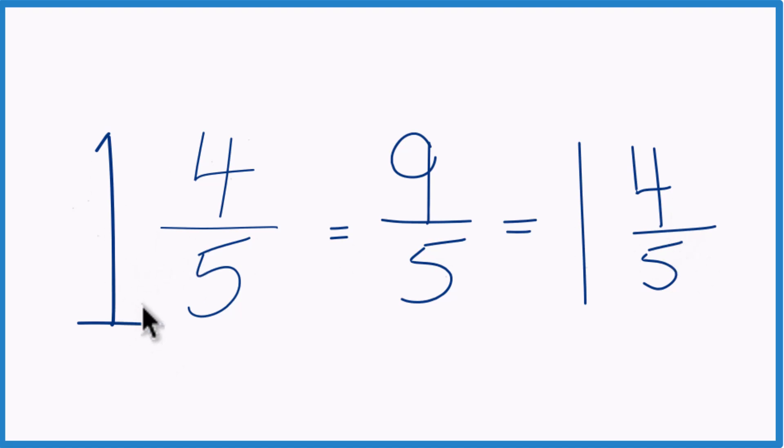That's what we started with, so we know we did it correctly. This is Dr. B writing 1 and 4 fifths, the mixed number as an improper fraction. The answer, 9 fifths.